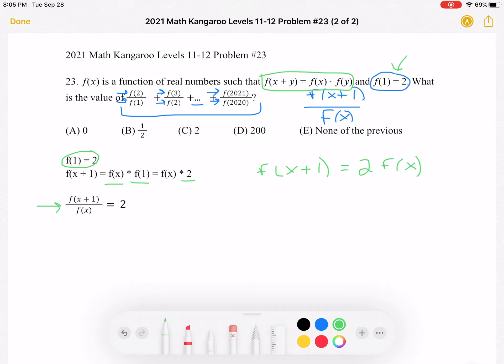again, f(x + 1) is equal to 2f(x). So now we realize that every single one of our terms is going to simplify to 2.